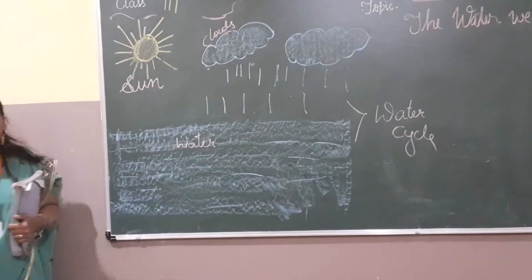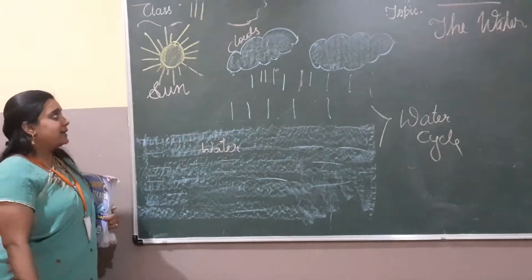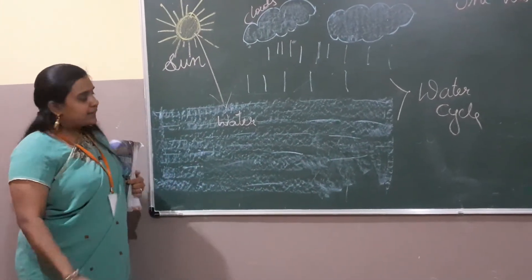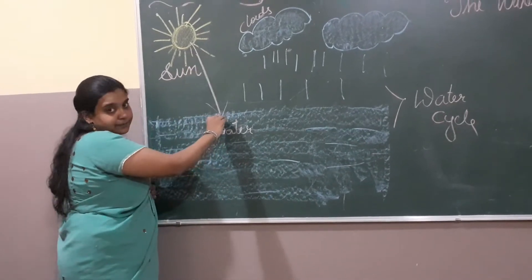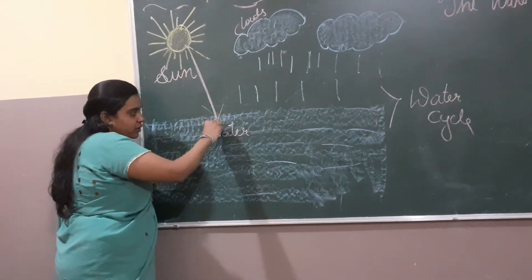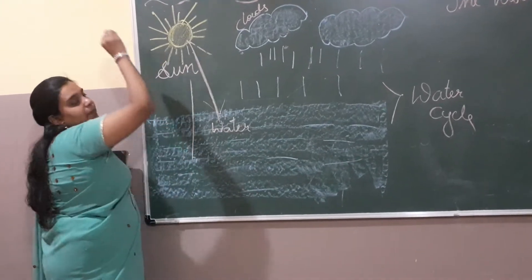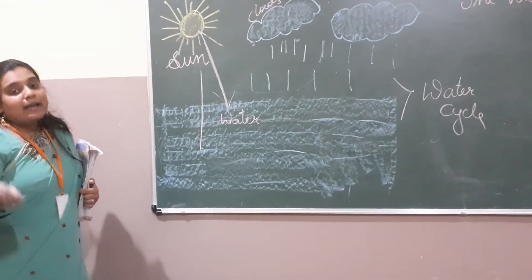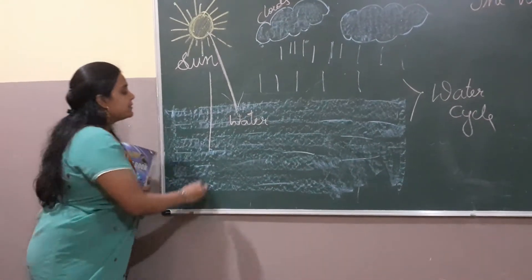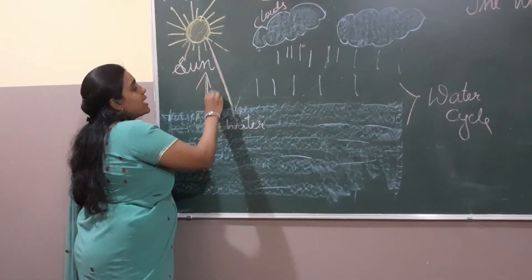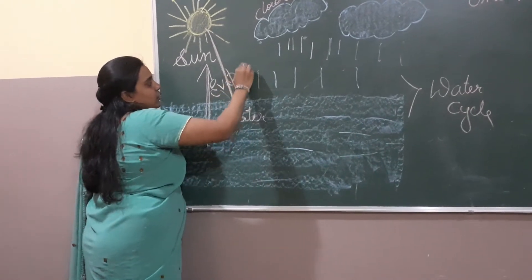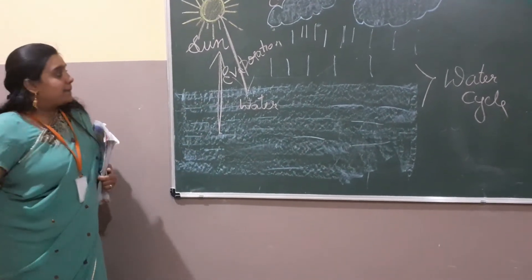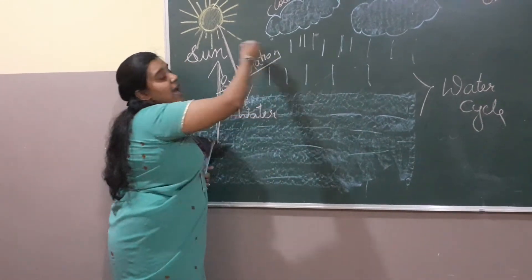The sun is shining and sun rays fall on the water — lakes, ponds, springs, oceans. If the sun rays fall on the water, this water will be evaporated. Evaporated means it goes up. Vapors are lighter than air, so this water goes up. The sun rays directly fall on the water, the water forms vapor and rises up. This is called evaporation.